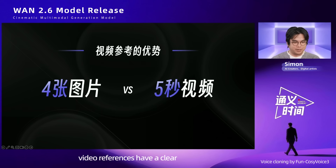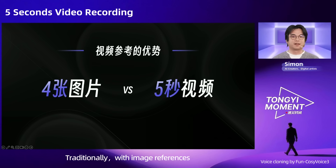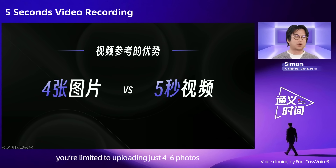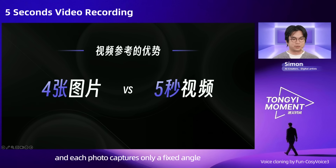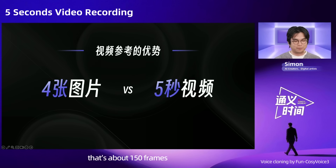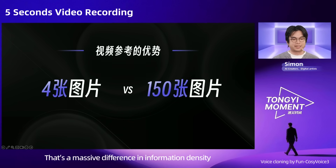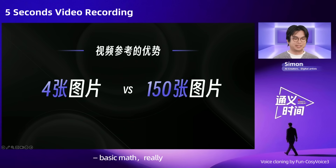Let me briefly explain why video references have a clear advantage over image references. Traditionally with image references, you're limited to uploading just 4 or 6 photos, and each photo captures only a fixed angle. But a 5-second video under a standard frame rate is about 150 frames — not just 4 or 6 images. That's a massive difference in information density.